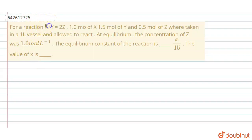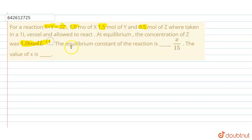Hello students. The question says that for the reaction x plus y converts to 2z, one mole of x, 1.5 mole of y, and 0.5 mole of z were taken in a one liter vessel and allowed to react. At equilibrium, the concentration of z was one mole per liter. We have to find the equilibrium constant of the reaction, given as x by 15.